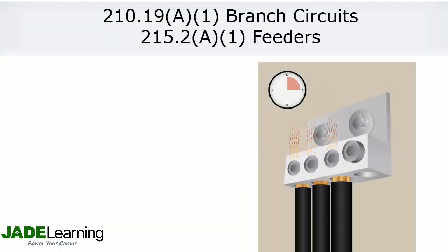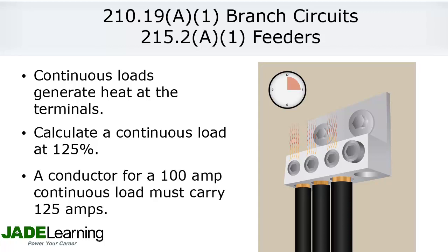Because of the extra heat that can be generated at the terminals where a conductor is terminated, all loads which will be on for more than three hours must be calculated at 125% of the continuous load. For example, a 100 amp continuous load requires a wire that will carry 125 amps.